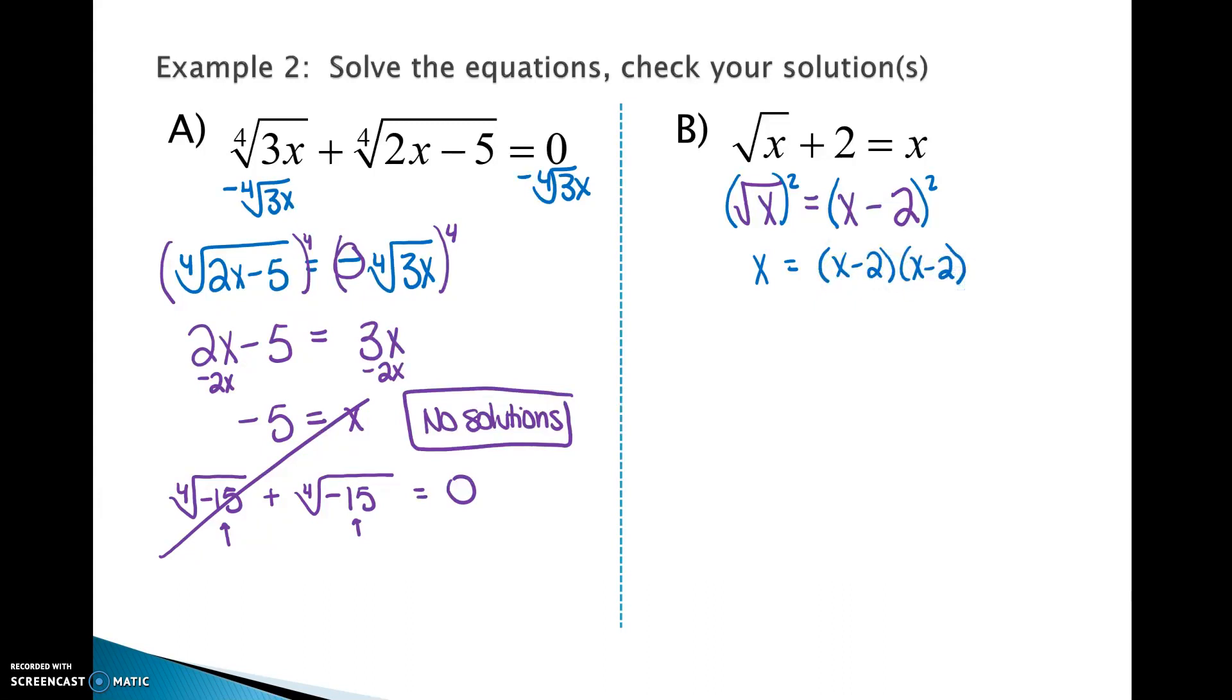So pause the video, take a moment, double distribute, combine your like terms, get that multiplied out. So you should be able to get it down to this: x equals x squared minus 4x plus 4. The problem here is we have x squared and x in the same equation. Anytime you have x squared and x in the same equation, you want to get 0 on one side. And then, just like the sign by our door says, we love factoring.